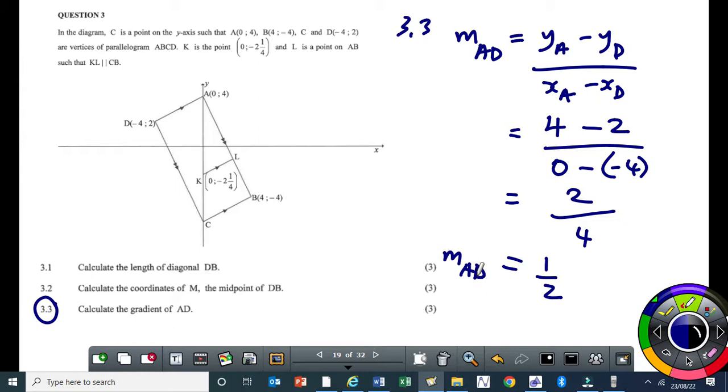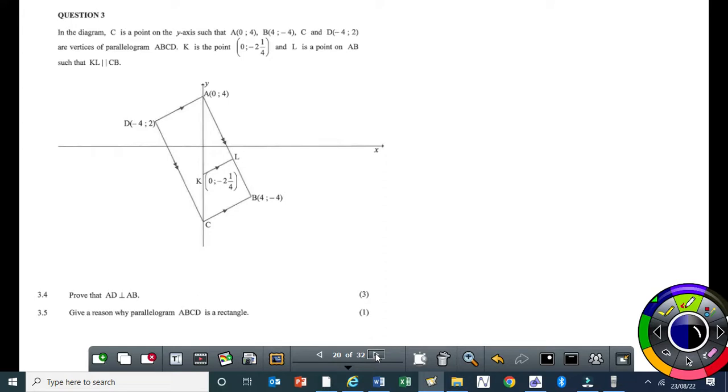Any questions so far? Let's move on to the next one. Now the next question says prove that AD is perpendicular to AB. Now if two lines are perpendicular, you have to find their gradients and prove that the product of those gradients is negative 1. So already I found the gradient of AD. Now I need to determine the gradient of AB. So my suggestion here is find the gradient of AB first.